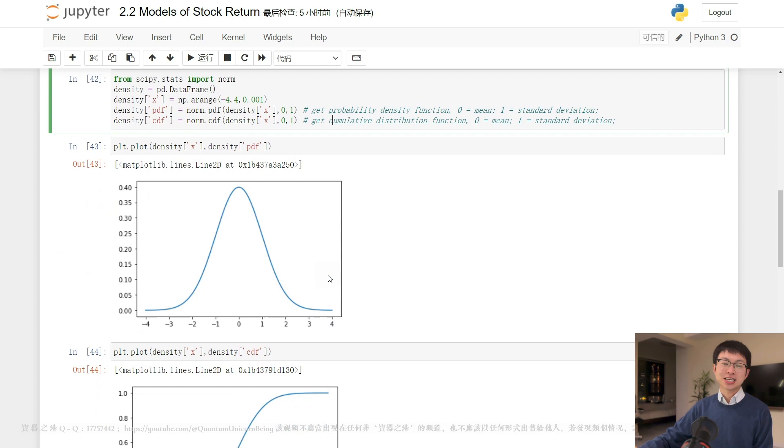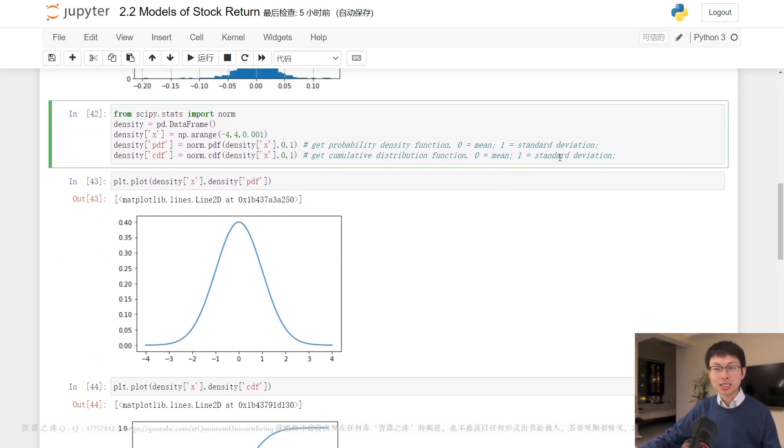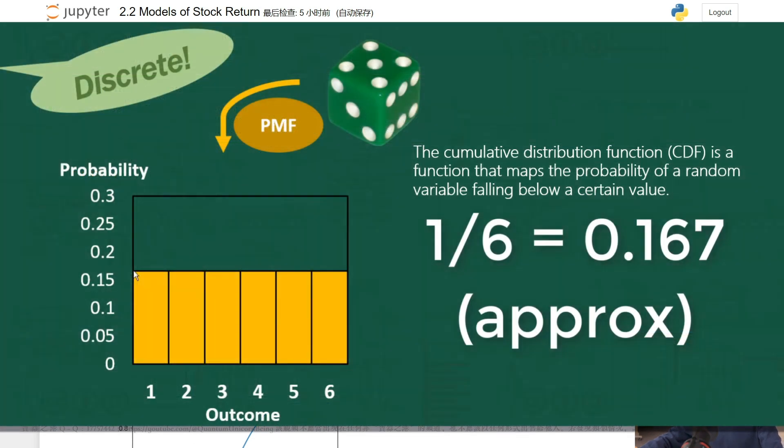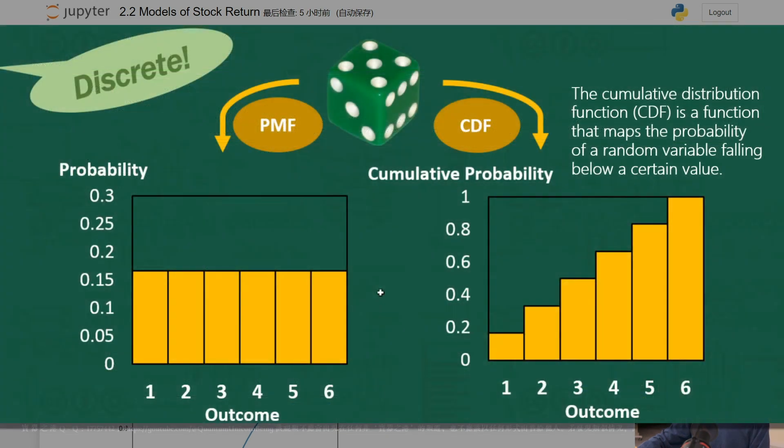Now I must take some time to introduce the concept of cumulative distribution function. The CDF is a function that maps the probability of a random variable falling below a certain value. To understand this concept, let's use the example of rolling a die. When you roll a six-sided die, each face has a different value from 1 to 6. The probability of rolling a certain value or lower depends on how many faces have values that are less than or equal to the target value. For example, the probability of rolling a 1 or lower is 1/6.